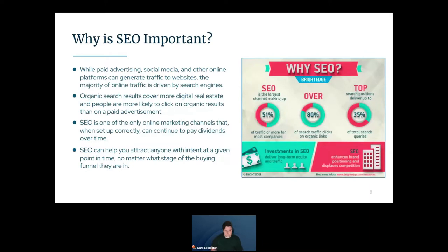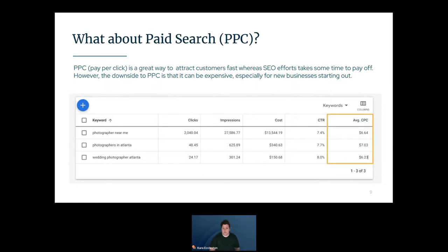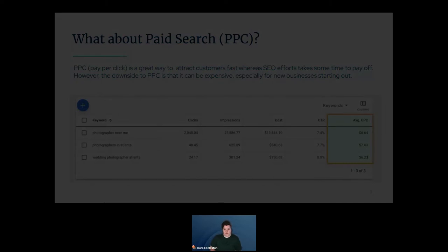You may be wondering about pay-per-click advertising, or PPC. PPC is a great way to attract customers fast, whereas SEO efforts take time to pay off. However, PPC can be really expensive, especially for a new business. For example, bidding on the keyword 'photographers in Dallas' could cost you around seven dollars every time someone clicks your ad, and if only one out of every ten people who click through actually inquire, you can see how that cost adds up. If you do have the budget while waiting for your SEO to take off, PPC is a great channel to supplement your online marketing strategy.